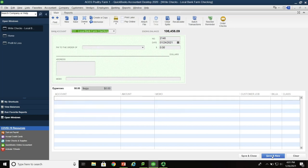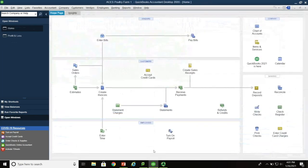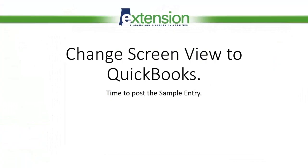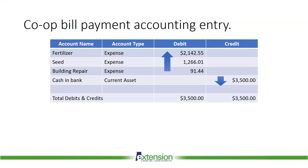Save and new, and we're ready for our next check. Here's the accounting entry for the co-op payment. QuickBooks is a full-blown double entry accounting system. Fertilizer, an expense account, is debited for $2,142.55. Seed is debited for $1,266.01. Building and fence repair is debited for $91.44. Cash and bank, a current asset, is credited for $3,500. Total debits and credits equal $3,500 — QuickBooks handles the basic double entry accounting equation just fine.